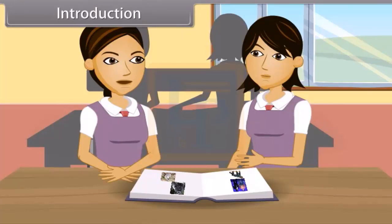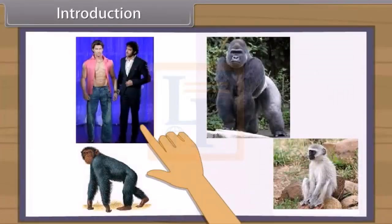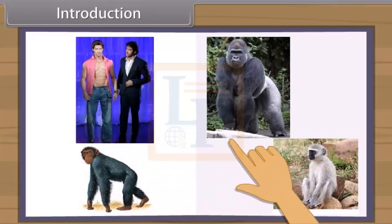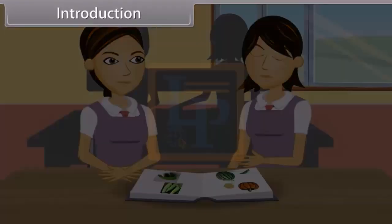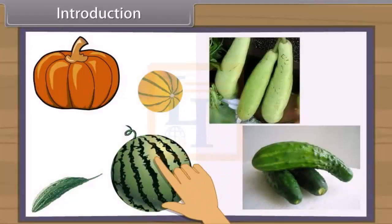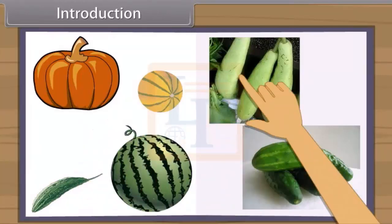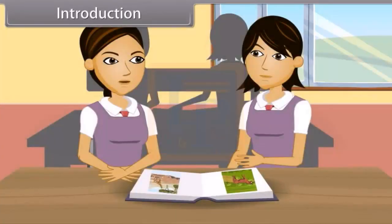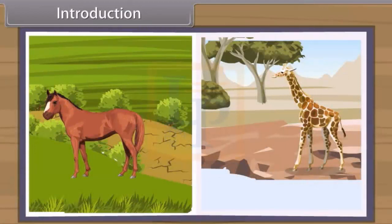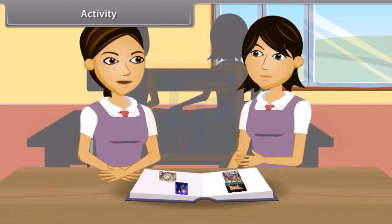But within a genus, there are some similarities. Human beings, chimpanzees, gorilla and monkeys are all alike. Similarly, among plants, melon, watermelon, bitter gourd, pumpkin, bottle gourd, cucumber etc. have many similarities. But when we study two genera, we find out they are entirely different. Let us do an activity to find out the similarities within a genus and differences among various genera.